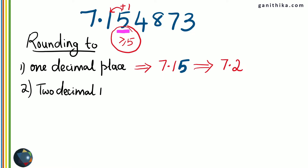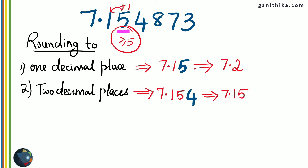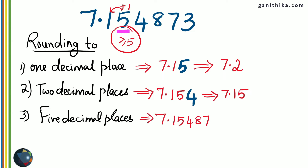Let's round it off to two decimal places. You consider the third decimal place — that number is less than 5, therefore there is no change in the previous number, and we give the answer as 7.15. Now rounding off to five decimal places: write all the way up to the fifth decimal place and look at the sixth decimal place, which is 3 — less than 5 — therefore there is no change, and the number would be 7.15487. If it had been 6 in the sixth decimal place, you would have changed the 7 to 8.